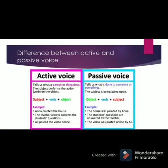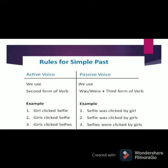On your screen there are some rules for simple past. In the active voice, we use the second form of the verb for simple past. In the passive voice, we use was/were plus the third form of the verb. For example, in the active voice: 'The girl clicked a selfie' — here we use the second form 'clicked.'